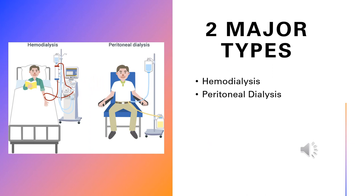There are two major types of dialysis. Hemodialysis is done with the blood. It takes the blood out of an artery, runs it through a filter to clean it, gets the waste out, and runs it back through the vein.